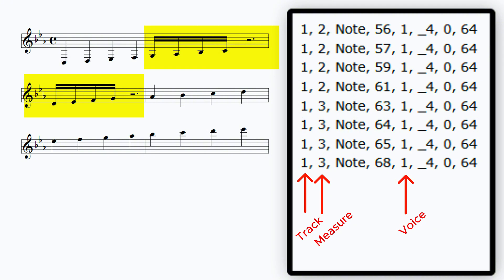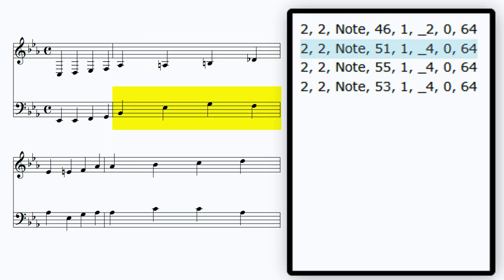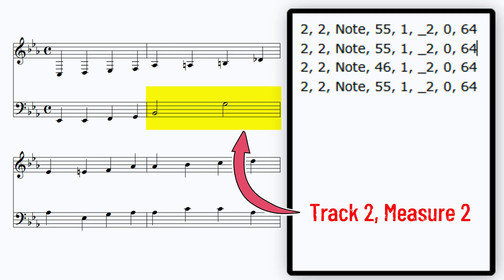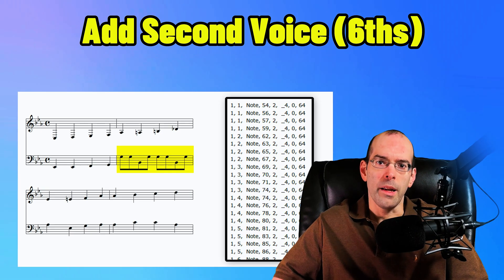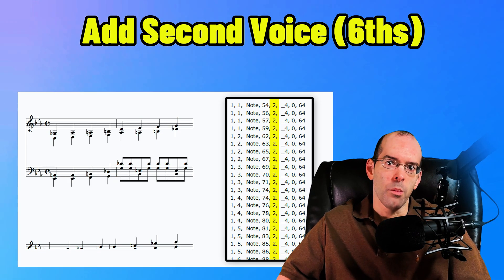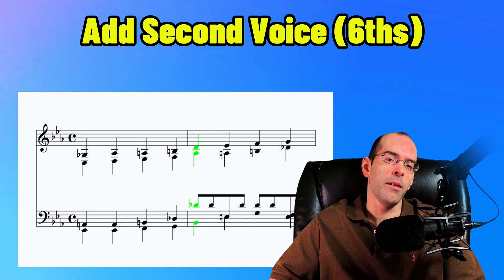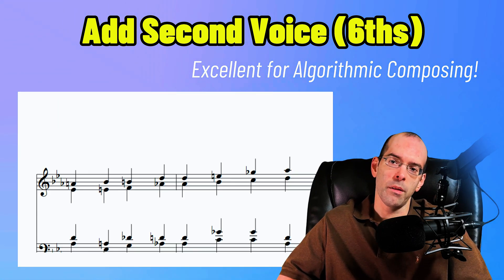By default, we compose in voice 1. So if we decide to update voice 1 on track 2, measure 2, then only voice 1 will be overwritten, leaving the rest of the composition intact. So if we want to add a second voice, MusicDotter is smart enough to understand that, and will automatically add voice 2 along with voice 1.